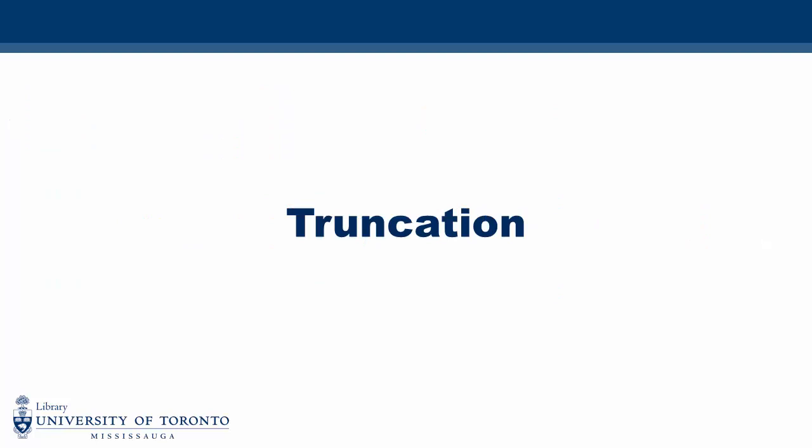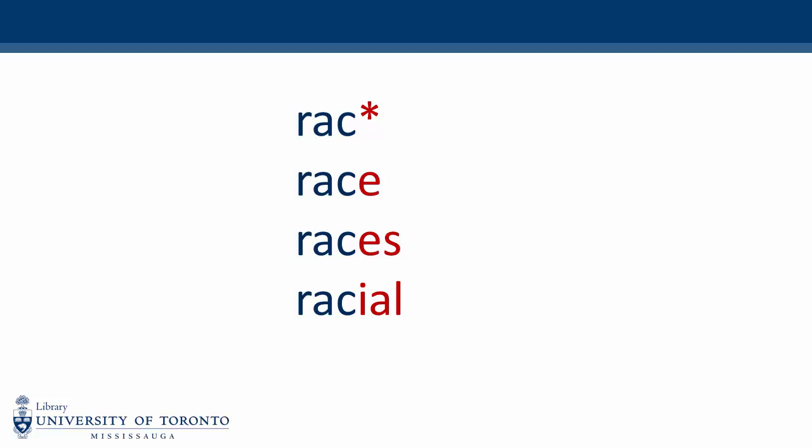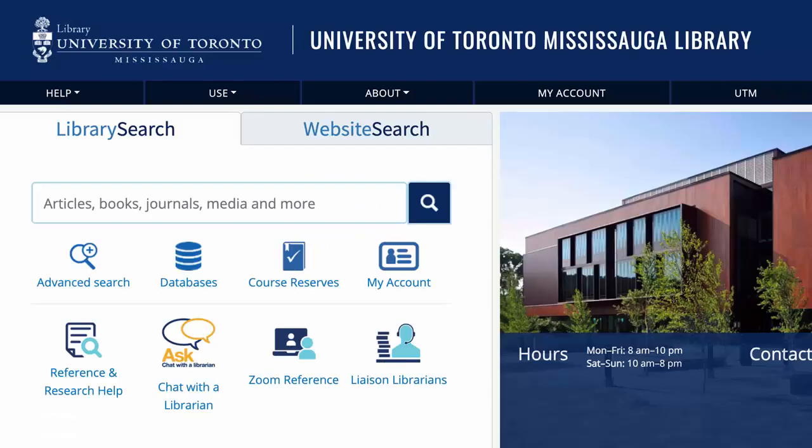The second set of special characters to consider are those that help us truncate our search terms. Truncation is a search method that uses symbols in place of letters to help you broaden your search. Although the symbols used to truncate can differ depending on the database, one of the most common symbols is the asterisk. When we truncate a word, we turn our search term into a root word by removing letters at the end and replacing them with our truncation symbol. For example, to truncate 'race,' we remove the 'e' and replace it with the asterisk, telling the database to add multiple endings to R-A-C — retrieving results with words like race, races, racial, etc.